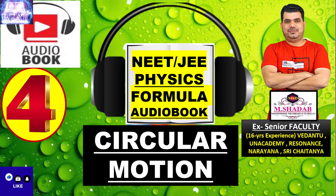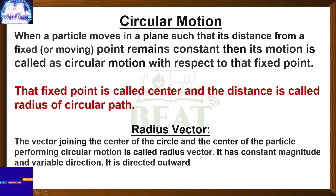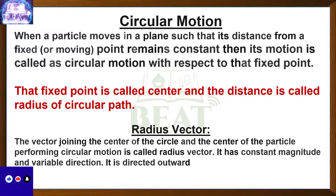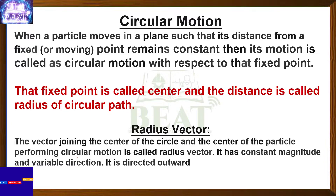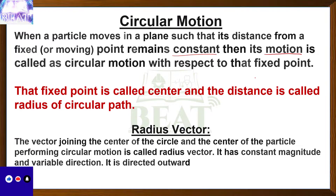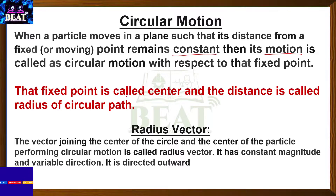First, let's define circular motion. If a particle moves in a plane such that its distance from a fixed point or a moving point remains constant, then that type of motion is known as circular motion. That fixed distance is known as the radius of the circle, and the path is known as the circular path with respect to that fixed point.